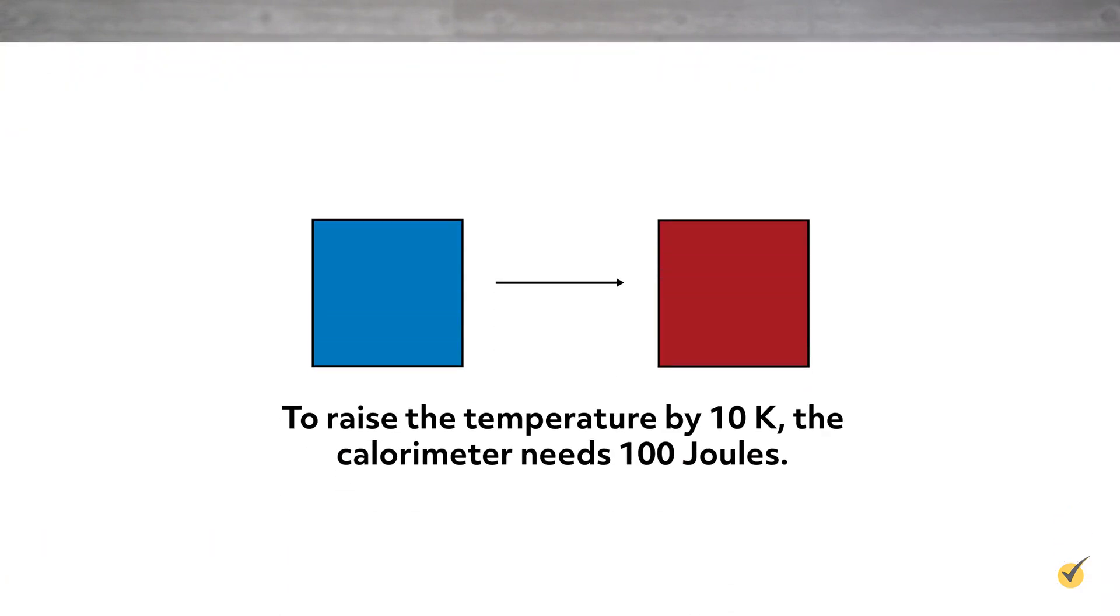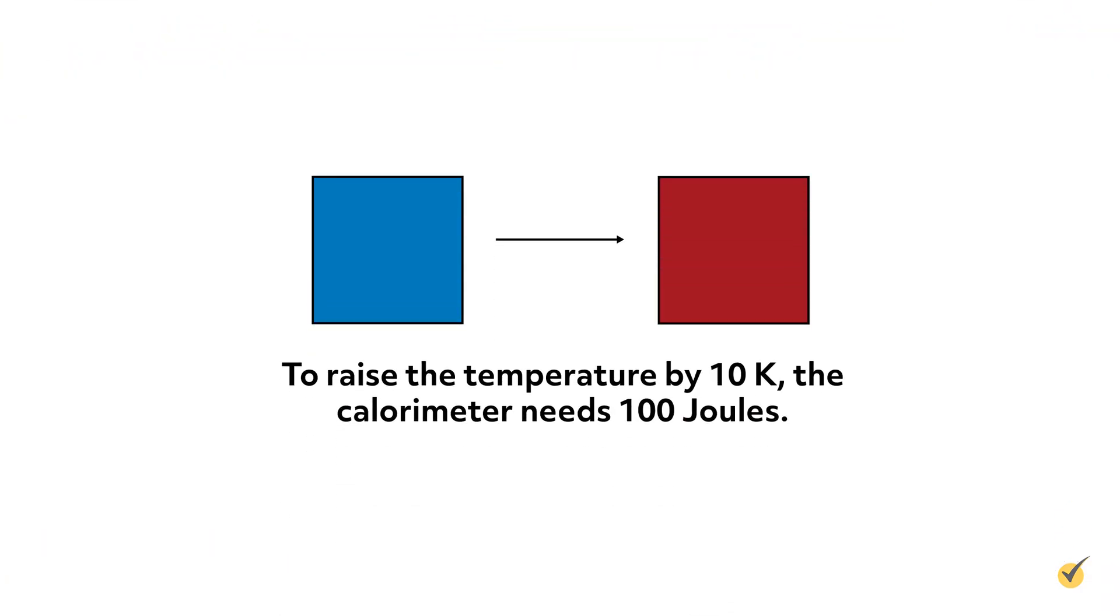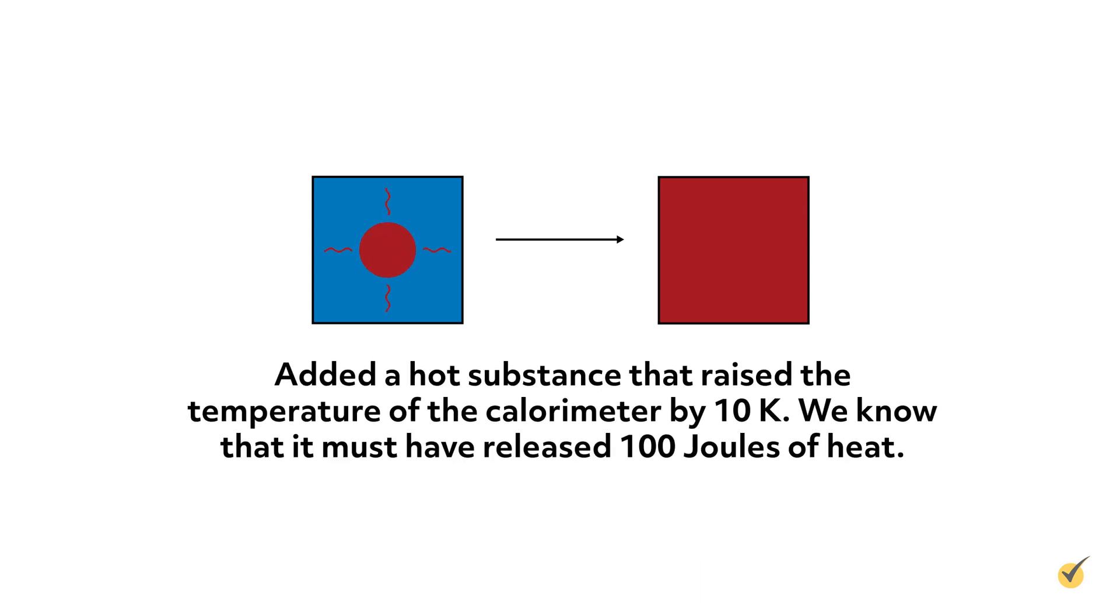So if we add something to the calorimeter that releases heat, we can use the calorimeter's change in temperature to calculate how much heat was released. For example, if we know the calorimeter needs 100 joules for the temperature to increase by 10 K, and we add a substance that raises the temperature by 10 K, we then know that the substance must have released 100 joules of thermal energy.